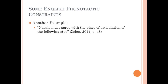Here's another example that Giga says is common across languages. The rule is: nasals must agree with the place of articulation of the following stop. Consider the nasal sounds at the beginning of noon and moon, and at the end of ring. The sound at the beginning of noon is made with the tongue touching the alveolar ridge. If you look above it on the IPA chart, you'll see the t and d sounds. We have words like ant and and in English, so the nasal sound n agrees in place of articulation with the stop that follows — the t or the d.